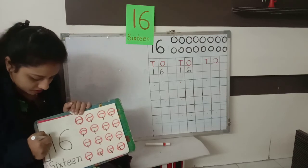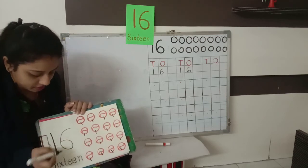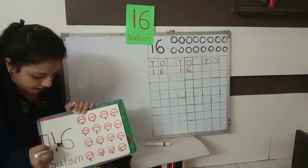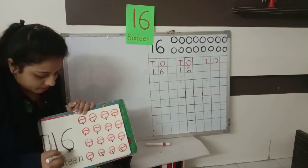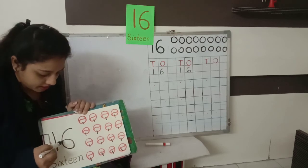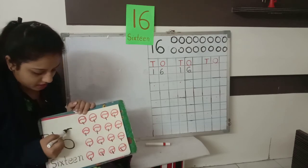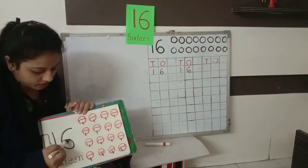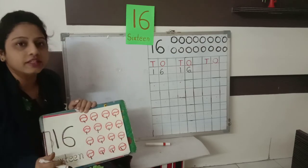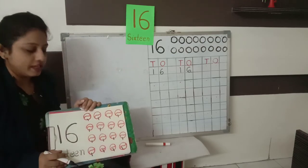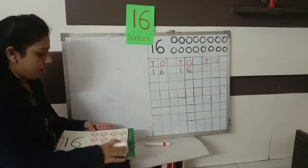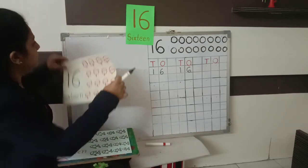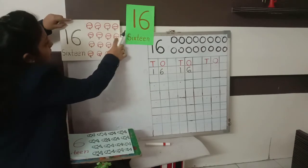How do you write it? 1-6, 16. First write 1 — standing — and then we write number 6. Like this. And then of course the 6 number we made. 1-6, 16. How many balls? 16 balls. Okay?